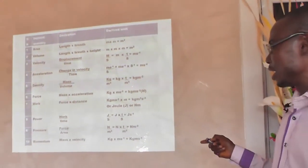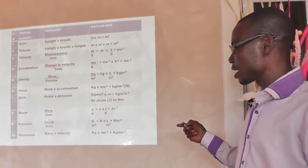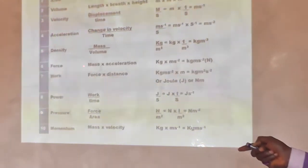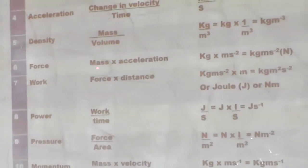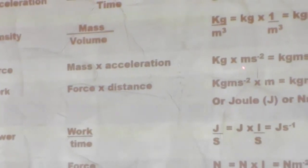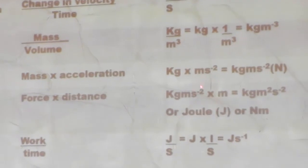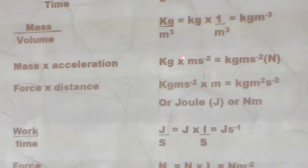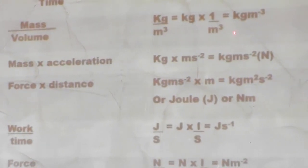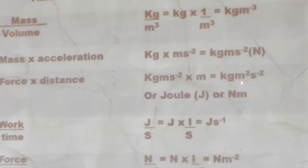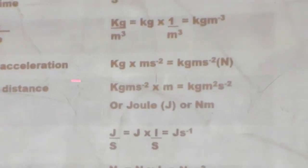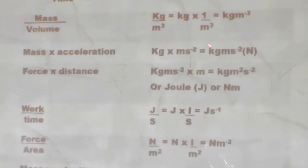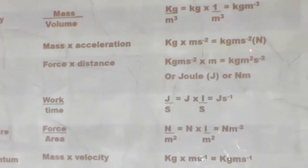Now let us look at force. Force can be defined as mass multiplied by acceleration. The SI unit of mass is kg, and acceleration is meter per second square. When you multiply kg by meter per second square, you get kilogram meter per second square. Since 1 kilogram meter per second square is the same as 1 newton, force can also be measured in newton (N).